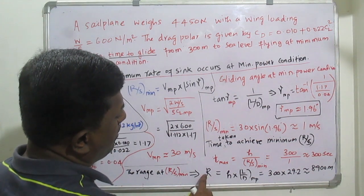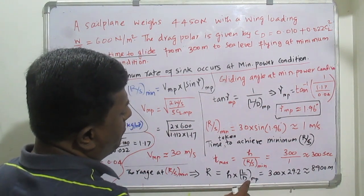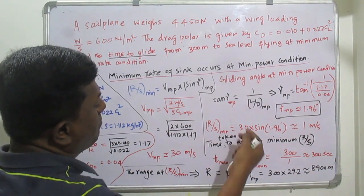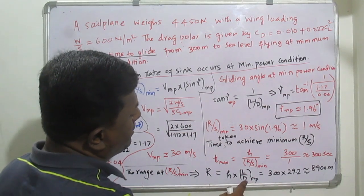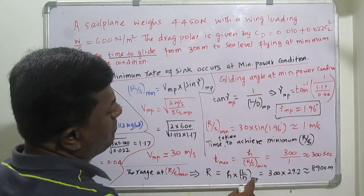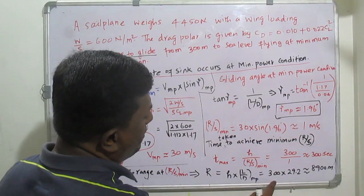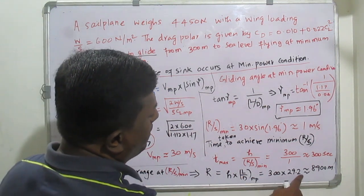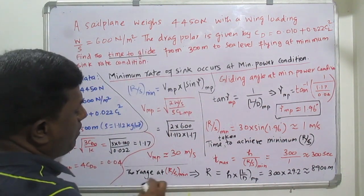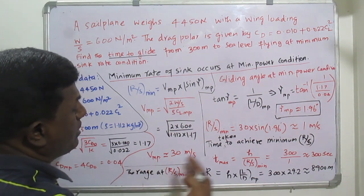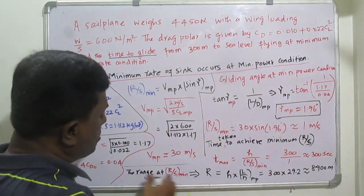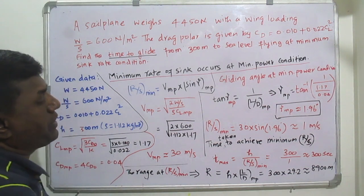Range at minimum rate of sink conditions is given by: Range = h × (L/D)_min_power. The L/D at minimum power = CL_min_power / CD_min_power ≈ 29.2. With height = 300 m, Range = 300 × 29.2 ≈ 8900 meters. That is the distance covered by the glider flying at minimum rate of sink conditions.